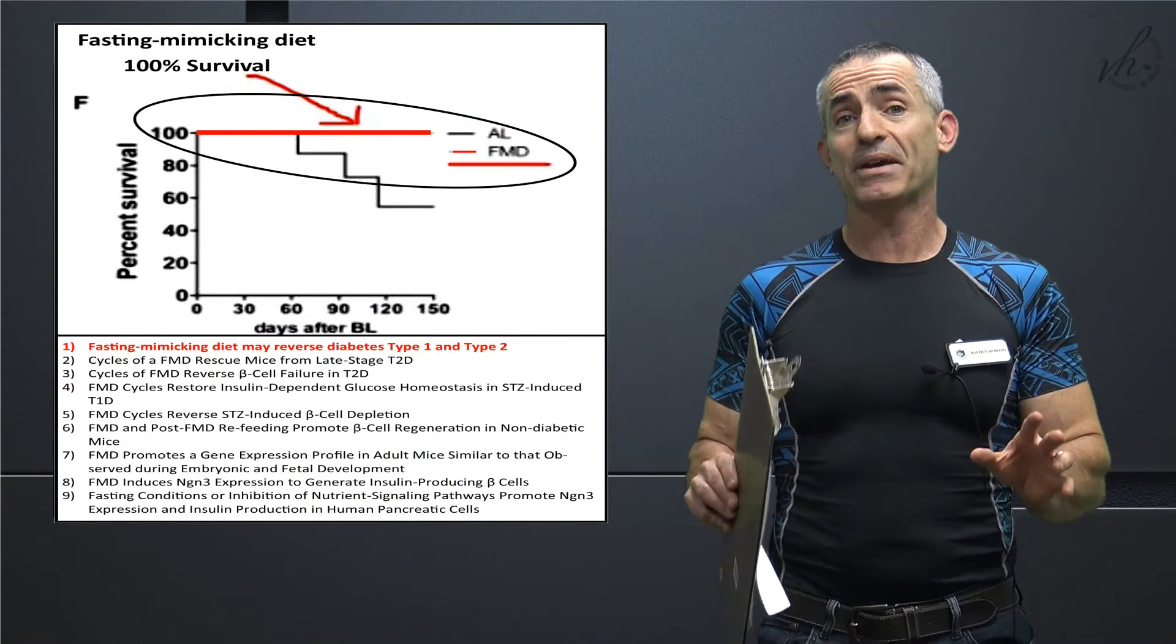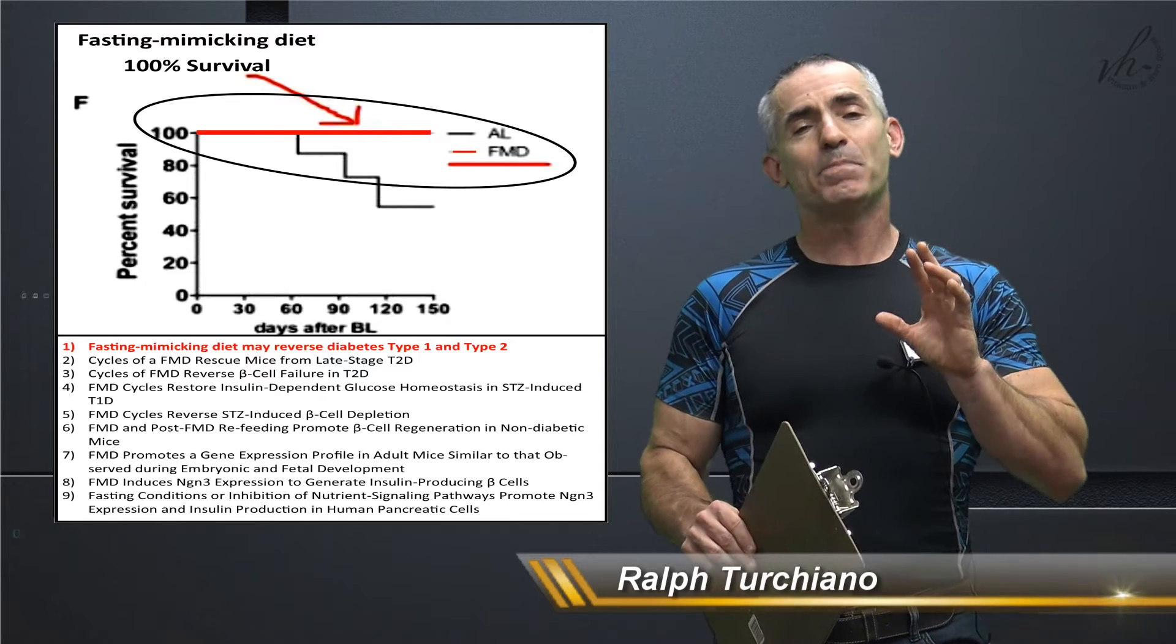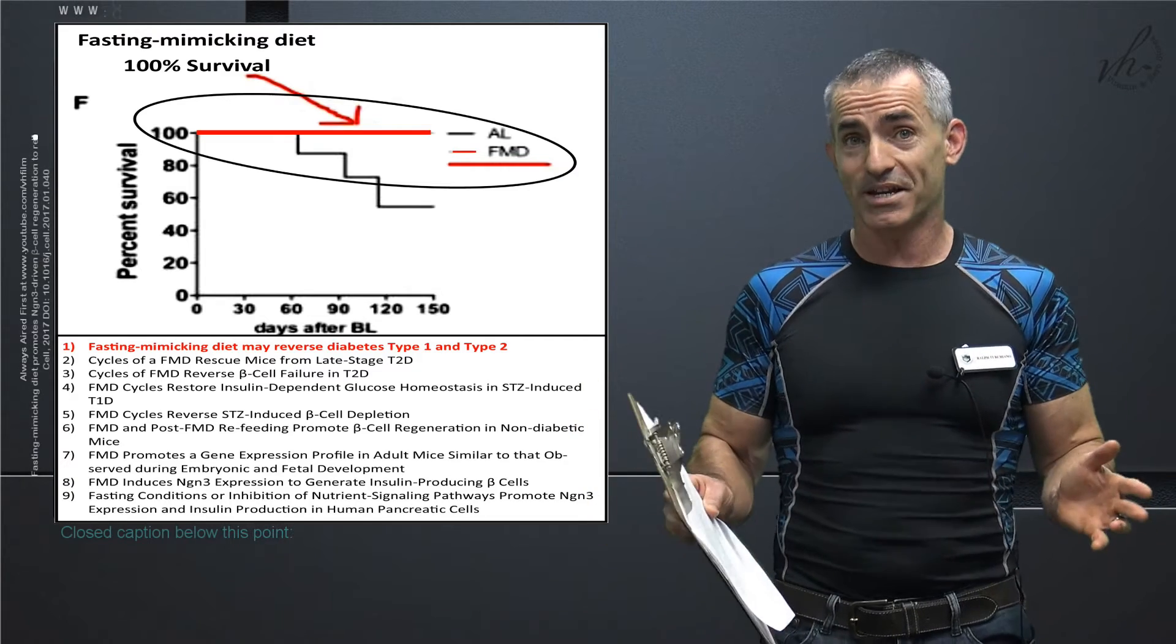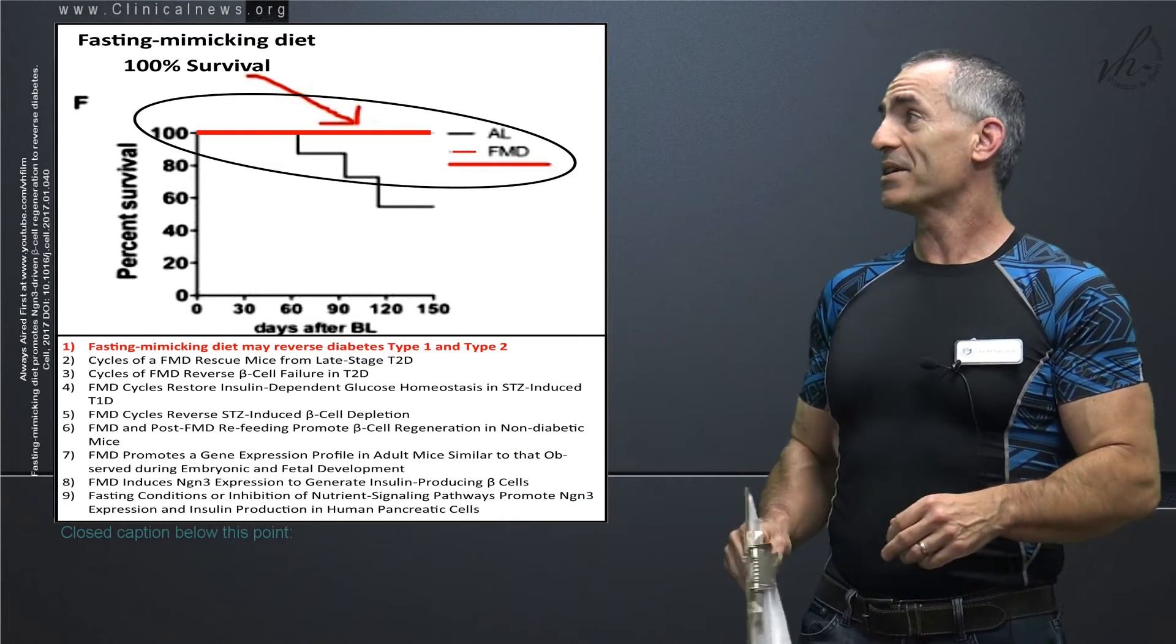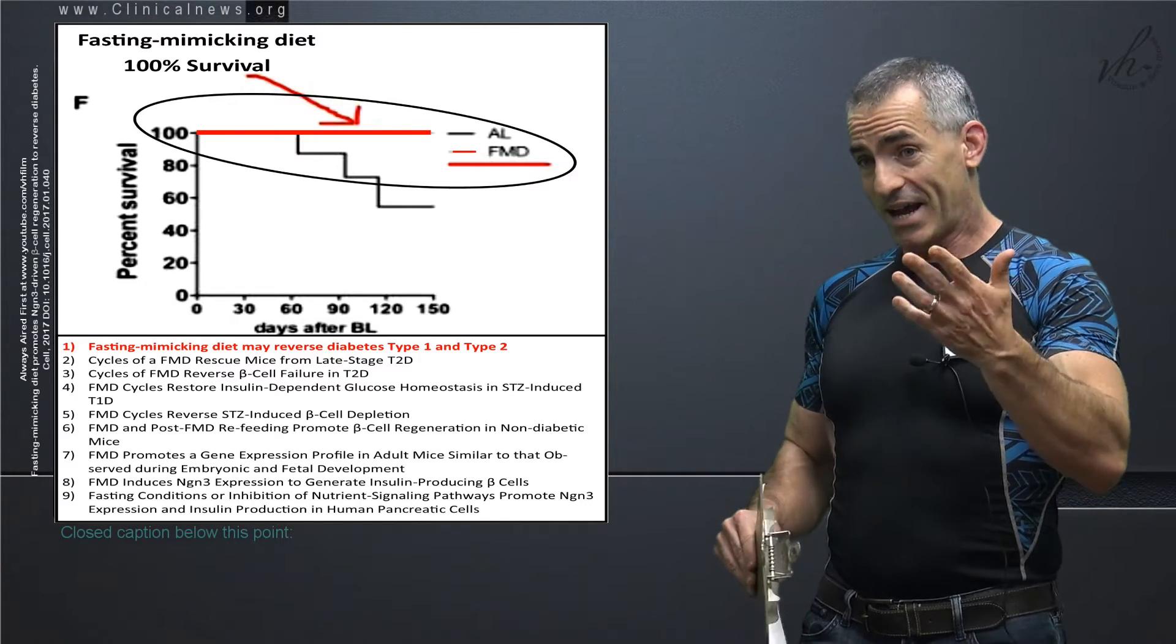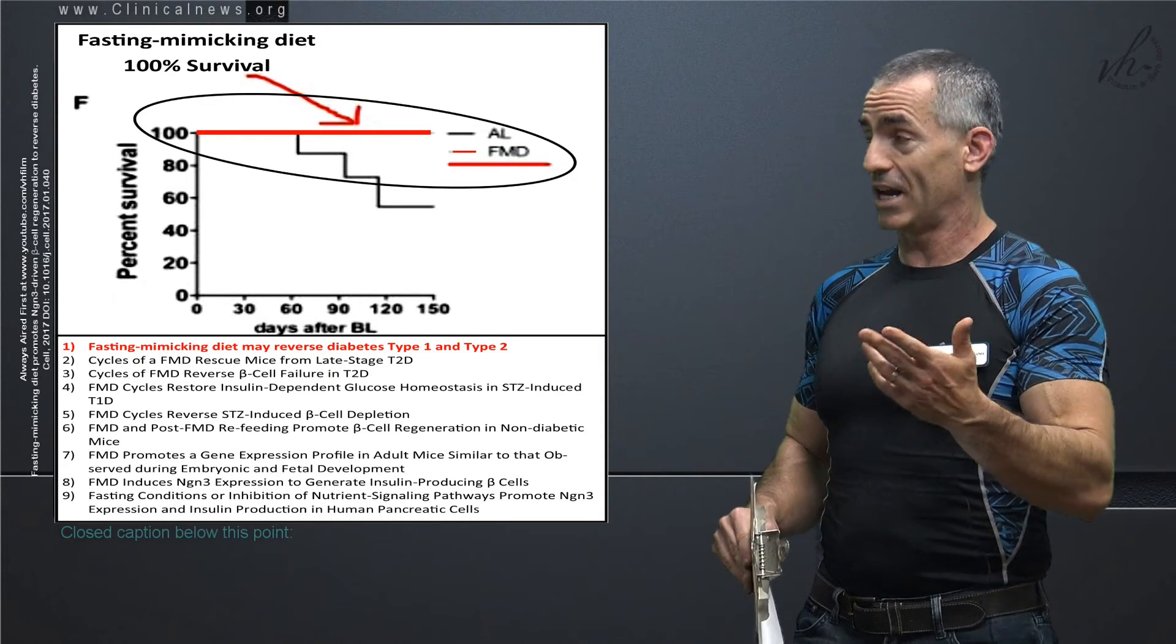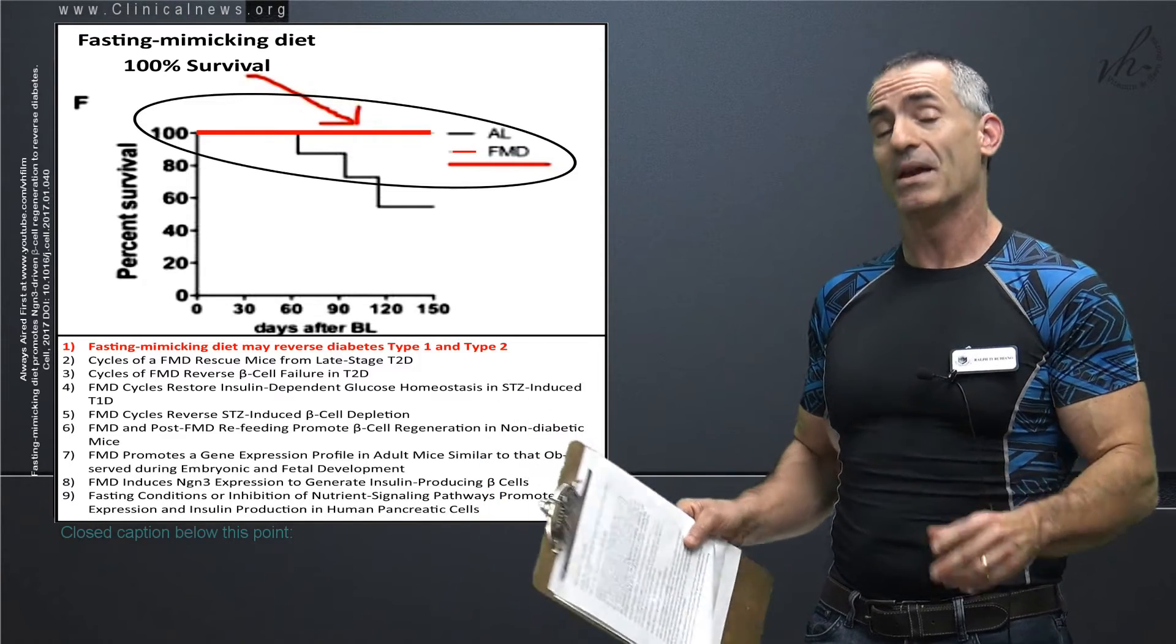Before we get into the fasting mimicking diet in regard to reversing type 1 and type 2 diabetes, these benefits of a fasting mimicking diet seem to go even beyond type 1 and type 2 diabetes into many disease-related conditions. Let's check out this first chart because it's actually really cool. You see the chart right there? You see the red line at 100% survival?